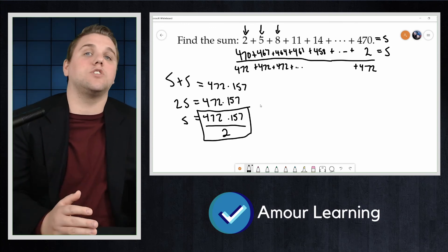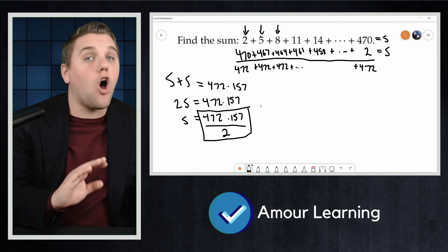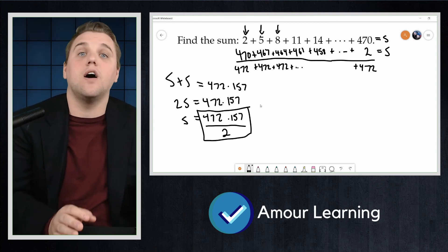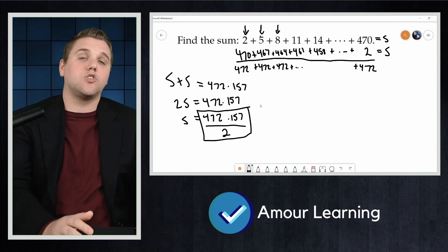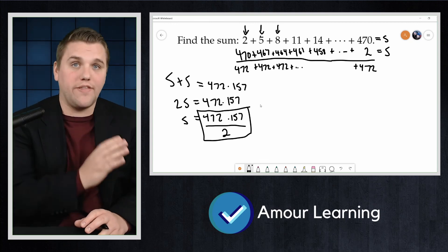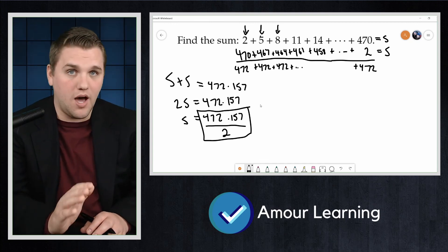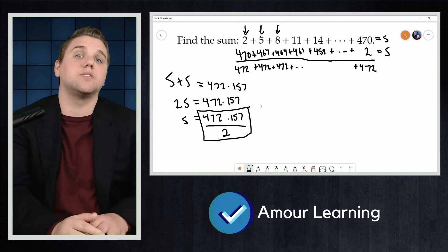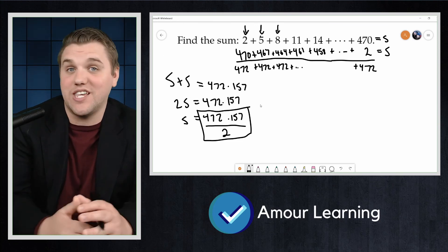This methodology of adding a sequence to itself and reversing the terms always works with partial sums of arithmetic sequences. So I highly recommend you try this tactic whenever you see a partial sum of an arithmetic sequence. Anyways, thanks everyone and I'll see you in the next lecture.